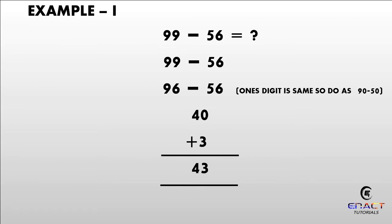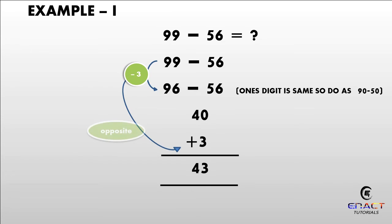LHS shifting. Example number 1: 99 minus 56. Subtracting 3 from 99, it will become 96. As you can see, the ones digit is the same, so directly subtract 96 minus 56. Hence our answer is 40. Change this minus 3 to plus 3. Adding 40 plus 3, our answer will become 43.